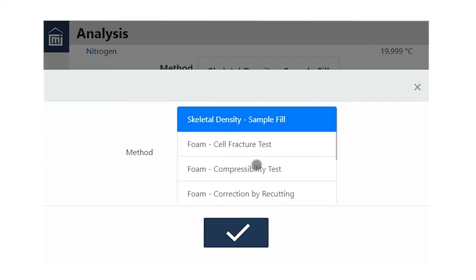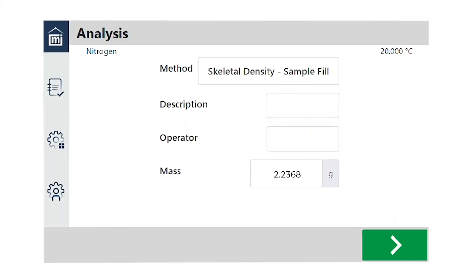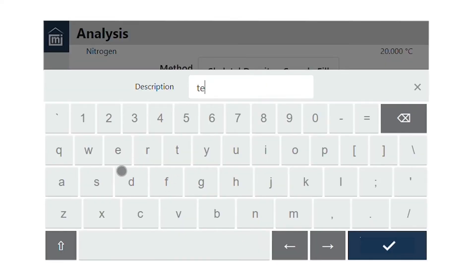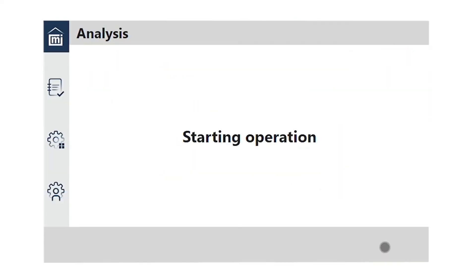Just select your method, and enter the sample description and the operator's initials, and hit start.